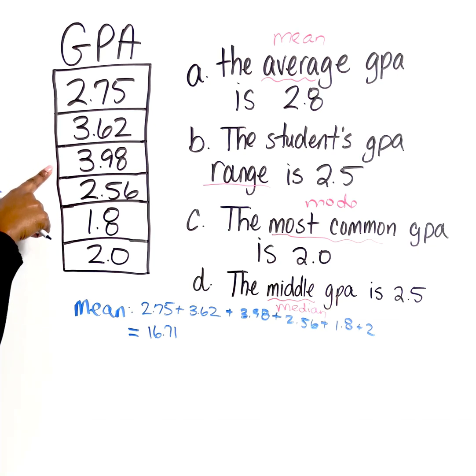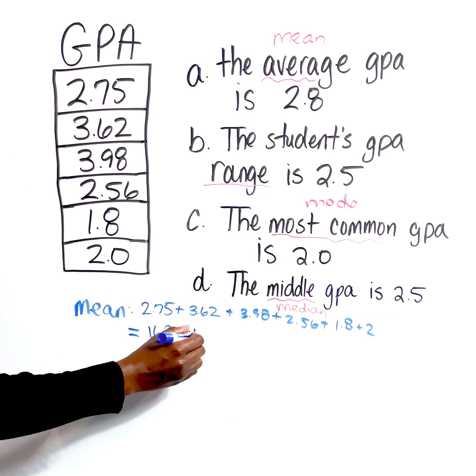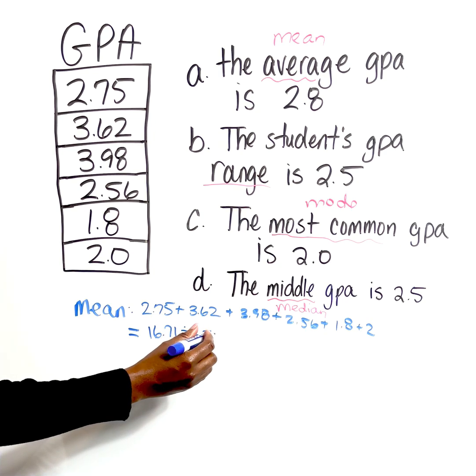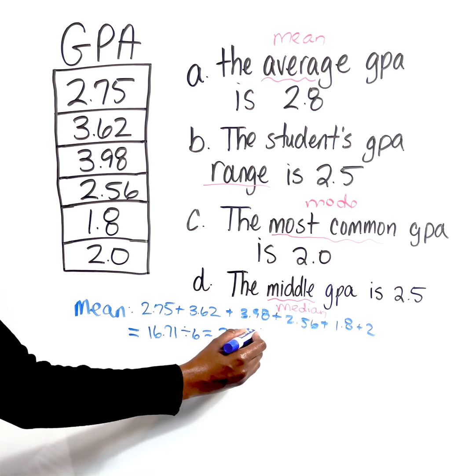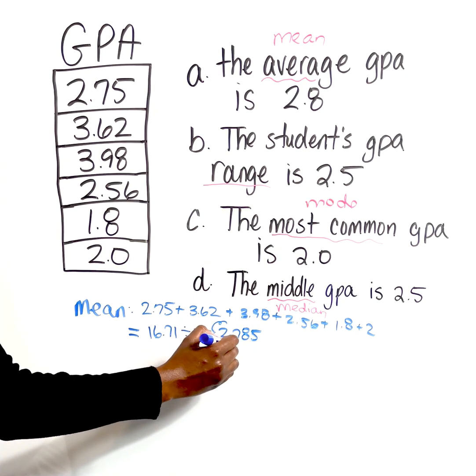So we have 1, 2, 3, 4, 5, 6. So if we divide this by 6, that is going to give us 2.785. So this is going to be our mean.